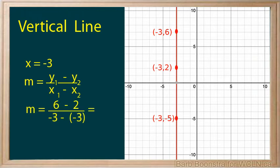We will use the points negative 3, 6 and negative 3, 2. This will give us the slope of 4 over 0. Since division by 0 is undefined, the slope of the vertical line is undefined.